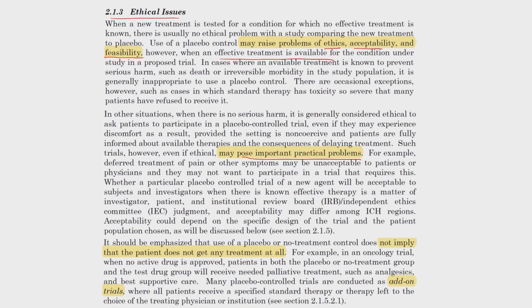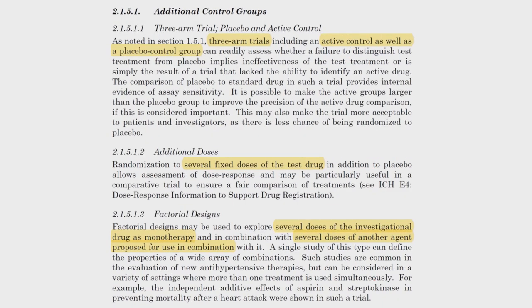From an ethical perspective, acceptability and feasibility are potential issues for the placebo control group because there is effective treatment available yet people are placed in the placebo group, and doctors must recommend their patients participate in a study where a placebo group will exist. During the trial duration, treatment will be delayed — whether it is pain or other symptoms, treatment is not given for the study period — and that is another part of the ethical issue. For cancer patients, palliative analgesic treatment or standard therapy is clearly defined and provided to both groups, with the study drug added onto the treatment group.